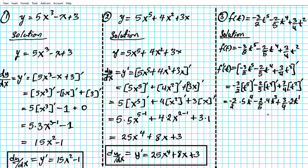Simplifying: 3 times 5 is 15, so we have -15/2·t⁴; 2 times 4 is 8, so we have -8/5·t³; and 2 reduces with 4 giving 3/2, so we have +3/2·t. The final answer is F'(t) = -15/2·t⁴ - 8/5·t³ + 3/2·t.